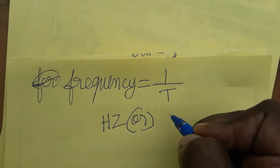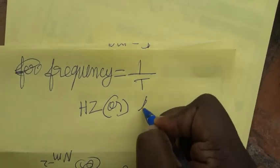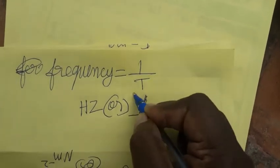That means 1 divided by T can be taken as frequency. Since T is in seconds (S), 1 divided by S is also called Hertz.